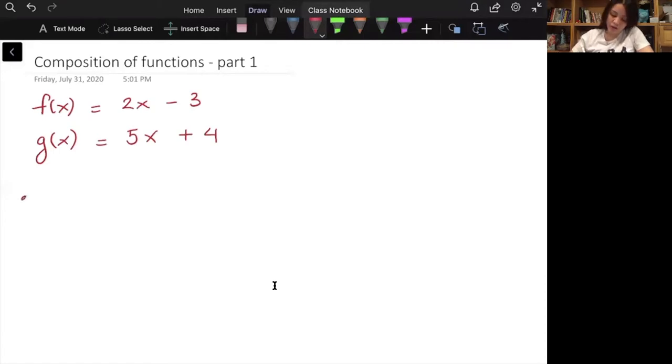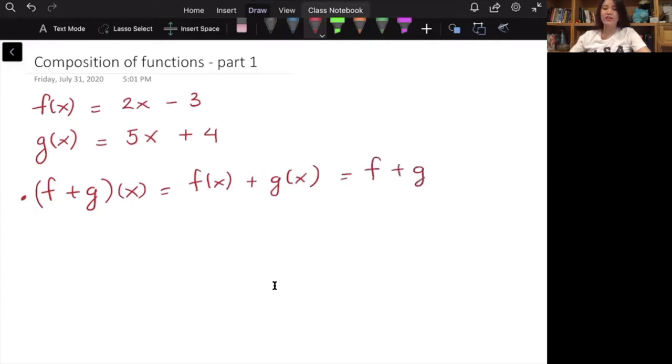So I can take (f+g)(x). This is just a notation, by the way, don't let it bother you. If it does bother you, then you can write it as f(x) + g(x). Or if you're feeling lazy, you can even write f + g. So what we do is we just take the function f and add it to the function g. So f(x) is 2x minus 3, plus g(x) is 5x plus 4. And then now we add like term to like term. So 2x plus 5x is 7x, and minus 3 plus 4, that's plus 1.